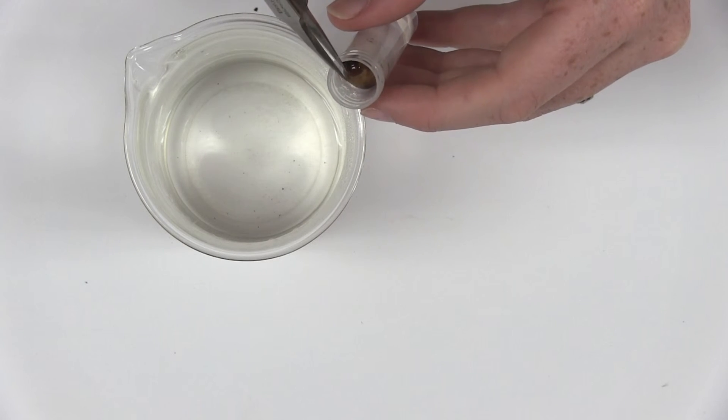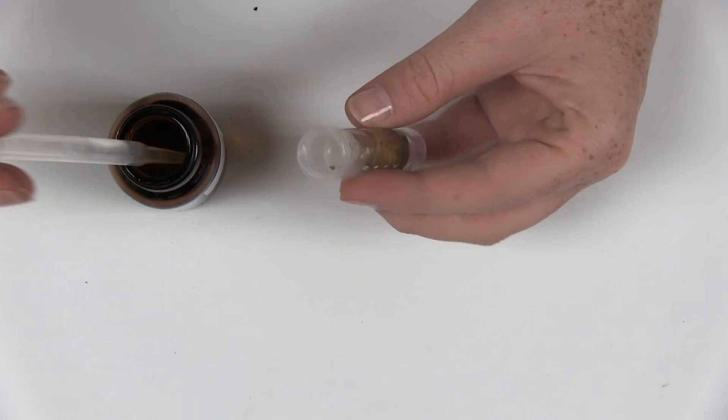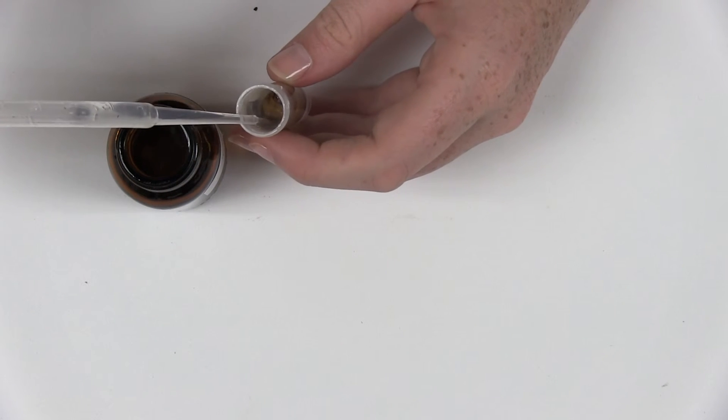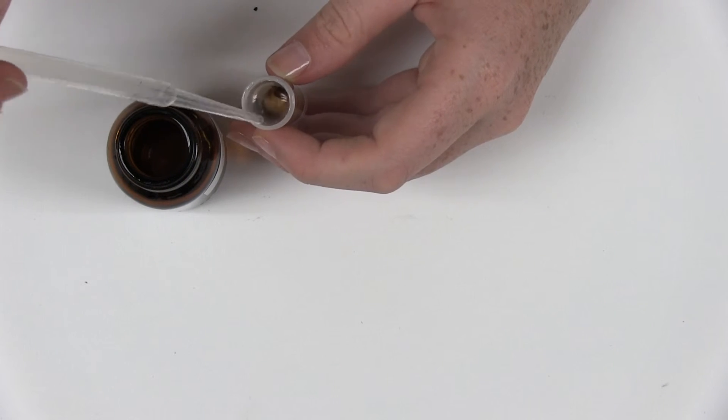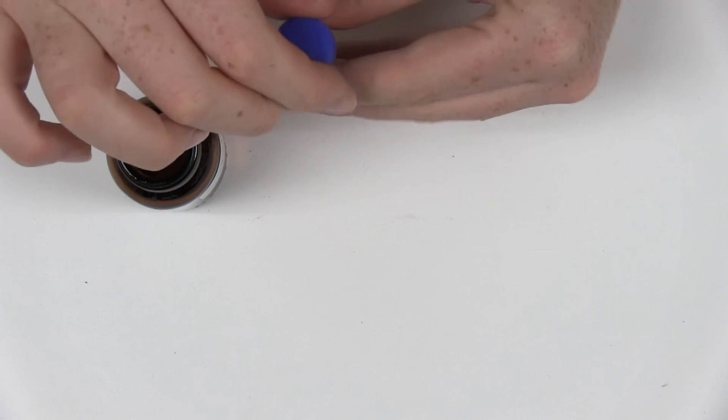Again, use your dropper to add more storage fluid until the grub is completely submerged. Tighten the lid so that the storage fluid will not leak or evaporate over time.